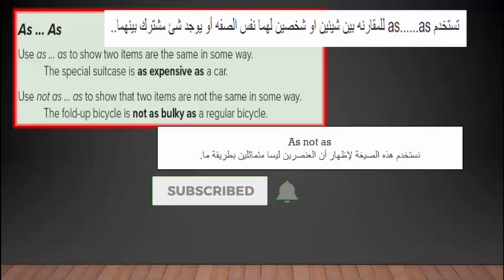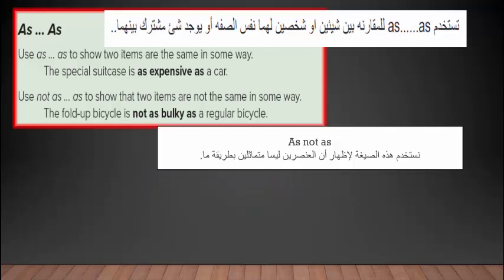Use not as...as to show that two items are not the same in some way — نستخدم صيغة not as...as لإظهار أن هذين العنصرين ليسا متماثلين بطريقة ما. كما نرى في المثال: The fold-up bicycle is not as bulky as a regular bicycle — وهنا نفى التماثل أو التشابه بين هذين الشيئين.